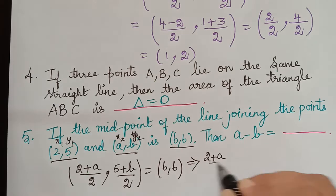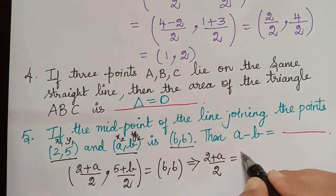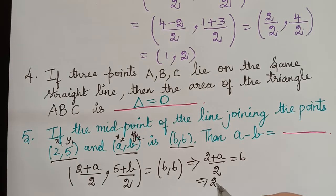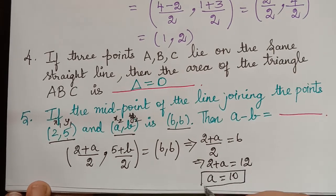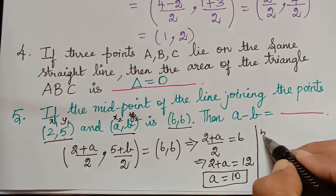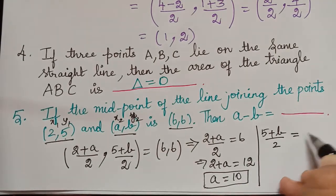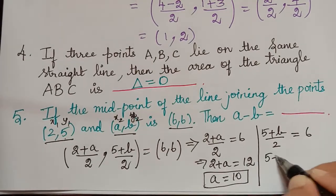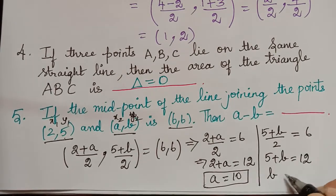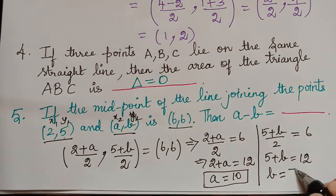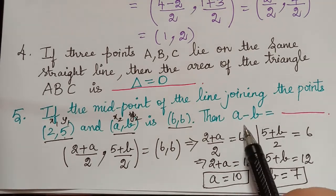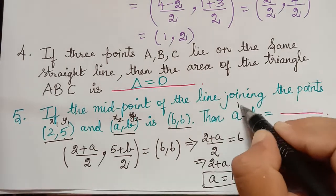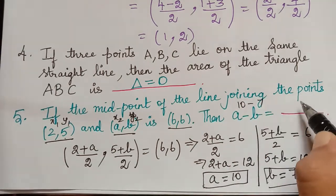From this, (2 plus A) divided by 2 equals 6, so 2 plus A equals 12, giving A equals 10. Next, (5 plus B) divided by 2 equals 6, so 5 plus B equals 12, giving B equals 7. Therefore A is 10 and B is 7, and A minus B is 10 minus 7, which equals 3.